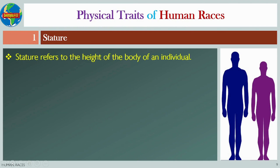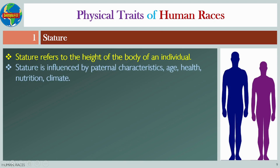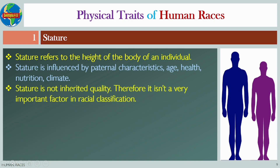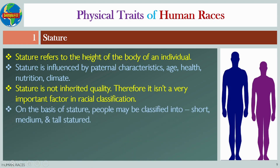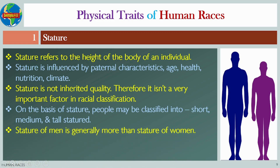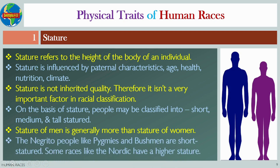Number one: Stature. Stature refers to the height of the body of an individual. Stature is influenced by paternal characteristics, age, health, nutrition, and climate. Stature is not an inherited quality, therefore it isn't a very important factor in racial classification. On the basis of stature, people may be classified into short, medium, and tall. Stature of men is generally more than that of women. The Negrito people like pygmies and bushmen are short-statured, while some races like the Nordic have a higher stature.